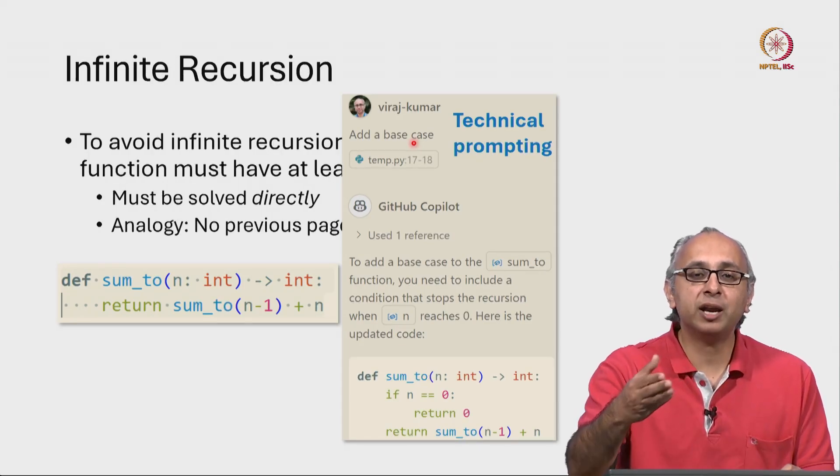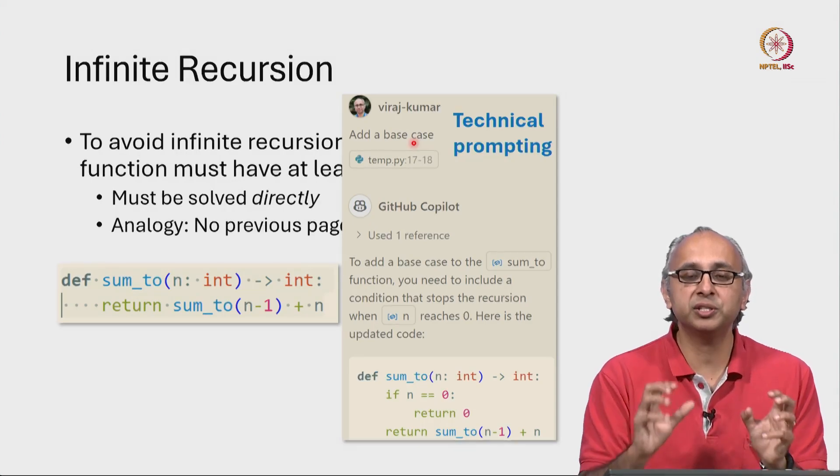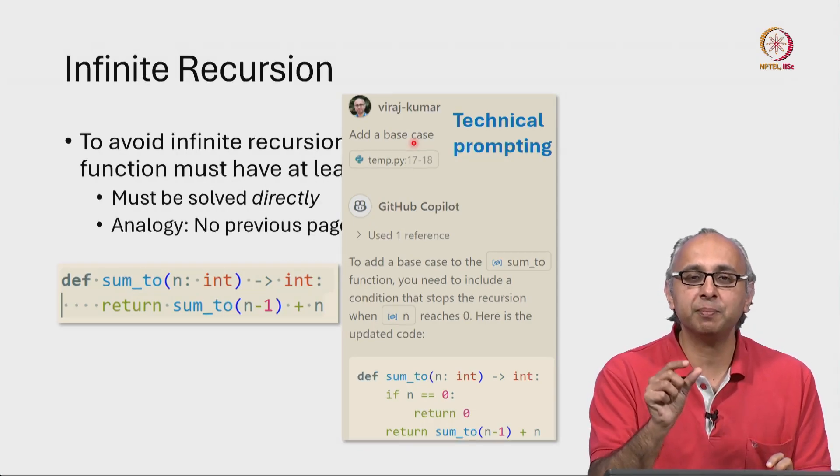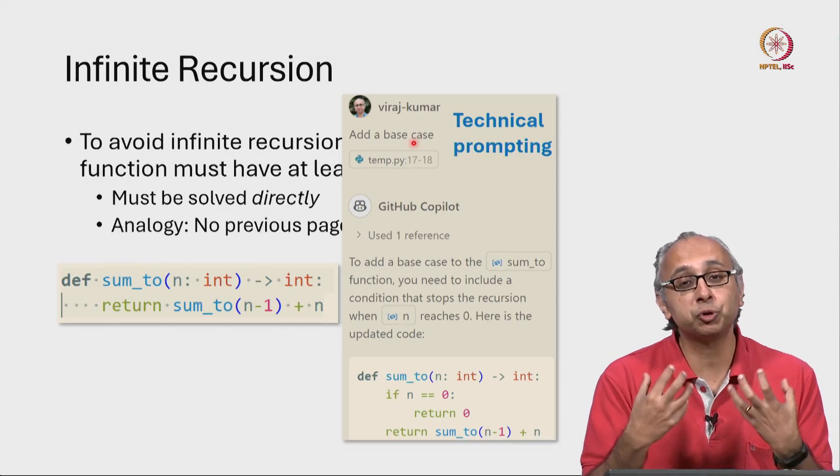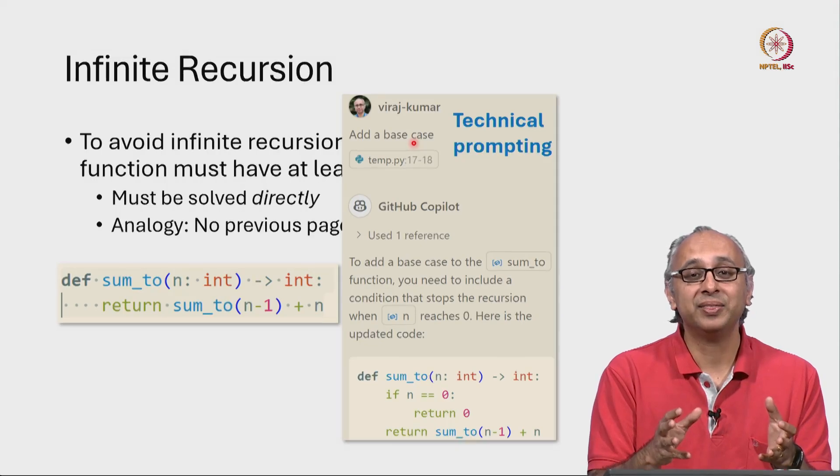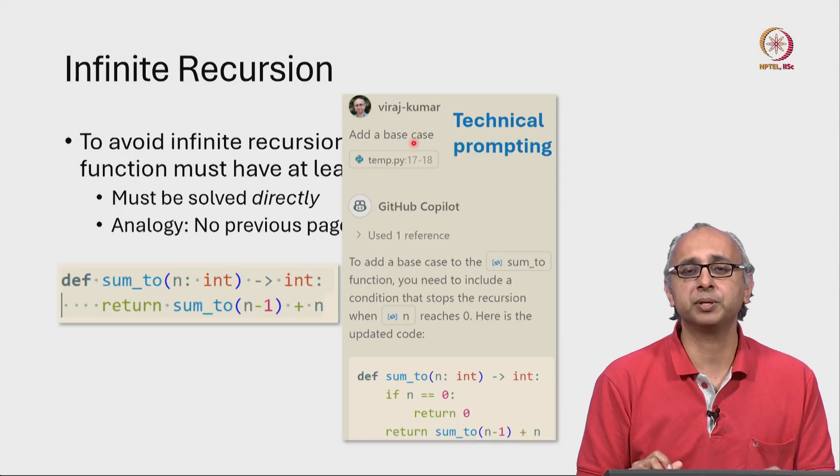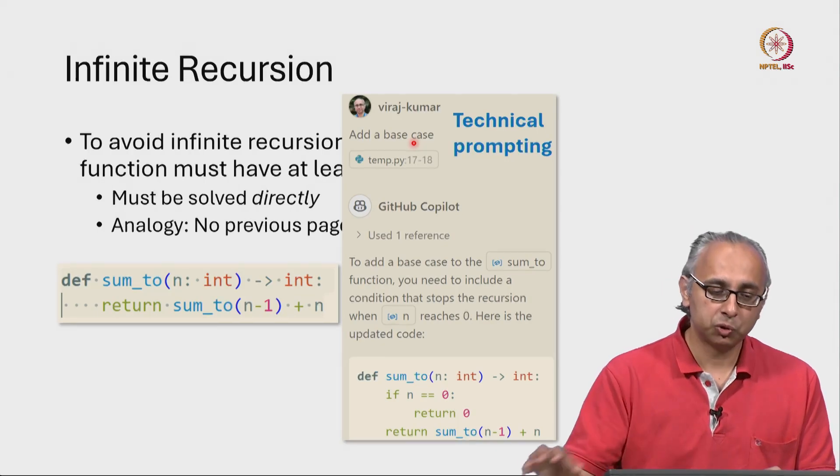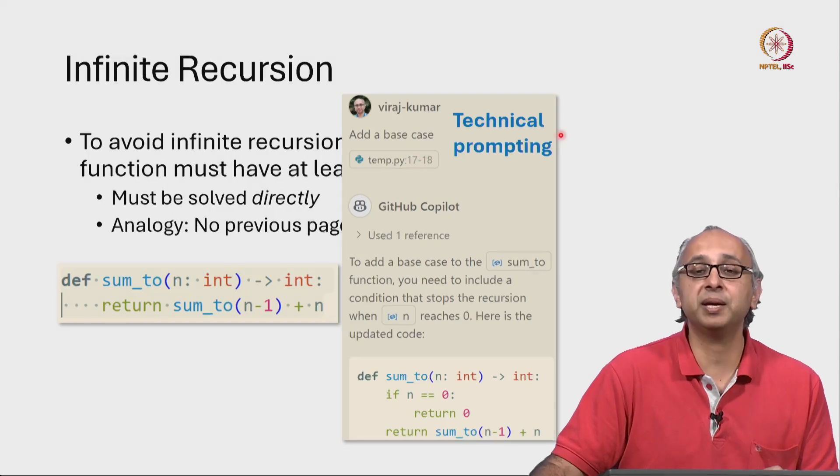This is simply saying that if you understand the vocabulary, the words and the concepts associated with something specific in your domain, and you use those words in context correctly, then your AI understands very quickly using a very short prompt what you want. So all I have done is highlighted the relevant code and said add a base case.